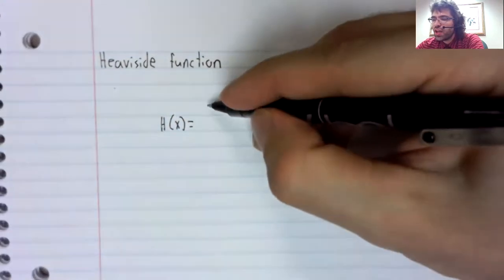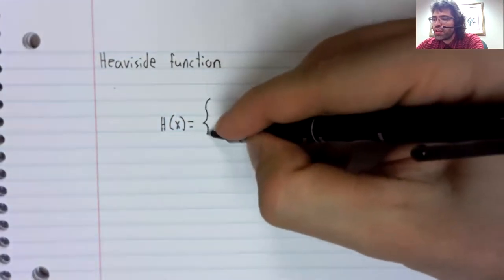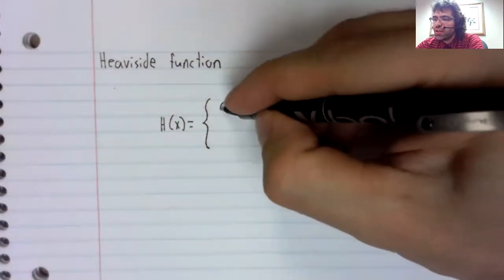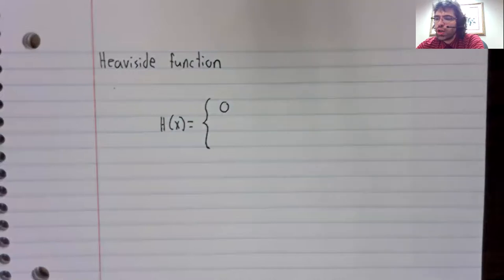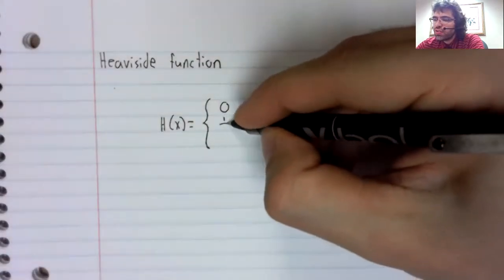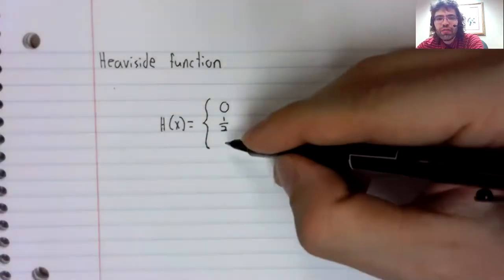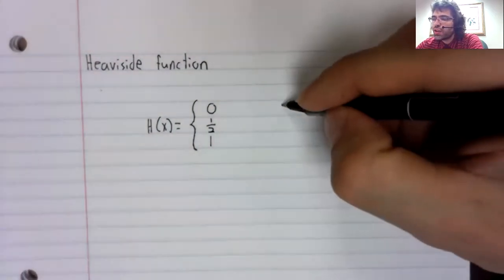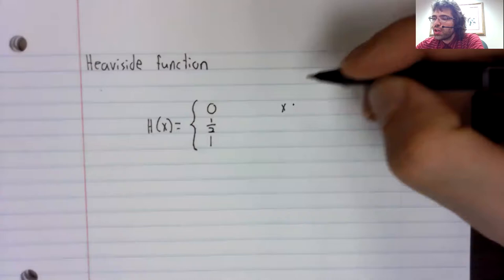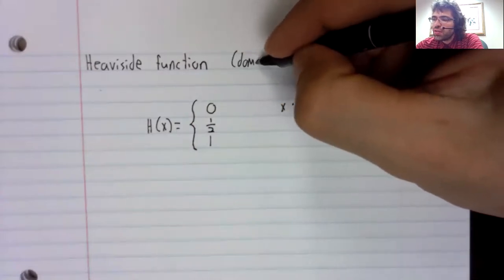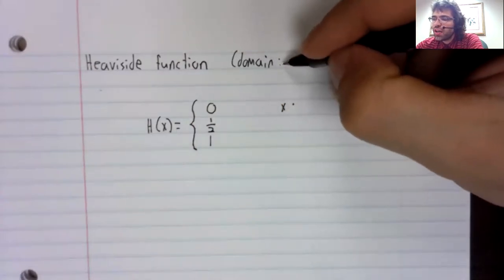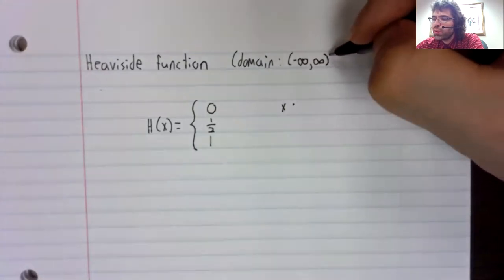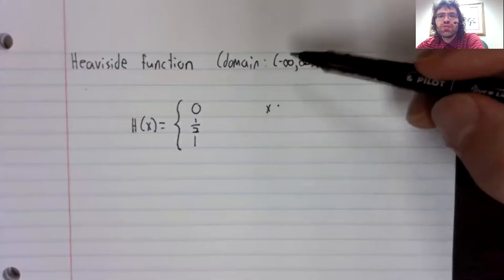The Heaviside function has three pieces. In the first piece, it's zero. In the second piece, it's one half. In the third piece, it's one.